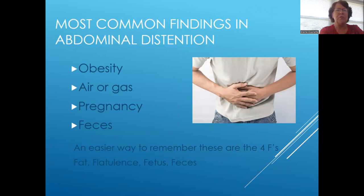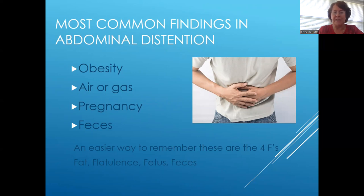The most common findings in abdominal distension are the four F's: fat or obesity, feces or constipation, fetus or pregnancy, and flatus — gaseous distension.